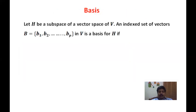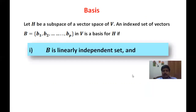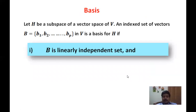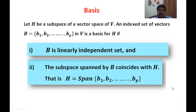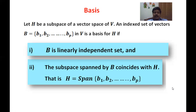Let H be a subspace of a vector space V, and let an indexed set V = {V1, V2, ..., Vp} in vector space V be a basis for H if two properties are satisfied: first, V is a linearly independent set; and second, the subspace spanned by V coincides with H, i.e., H = span(V). If V can span the entire V and is linearly independent, then V is said to be a basis for the vector space V.